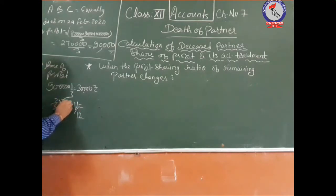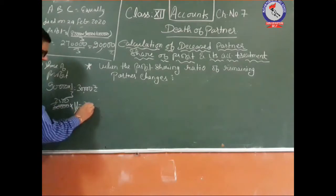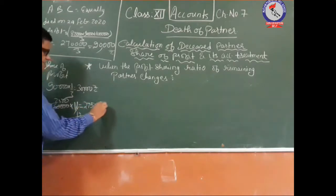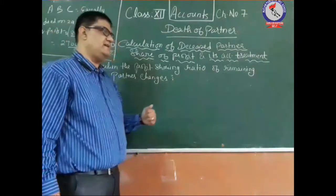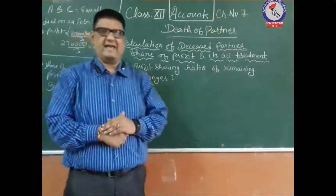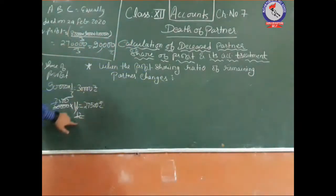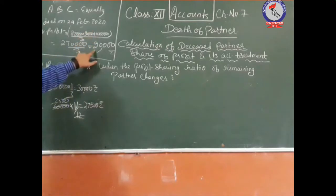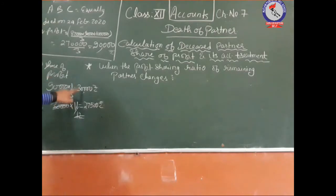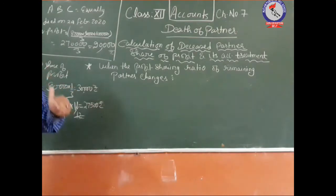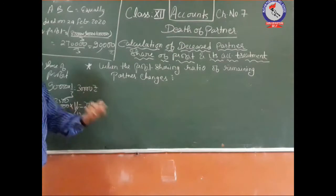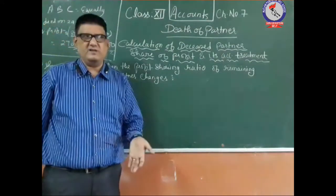So C will get the profit for 11 months only: 30,000 × 11/12 = 27,500 rupees. In this accounting year, C will get 27,500 rupees as his share of profit, calculated on the basis of the average profit of the last 3 years.